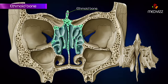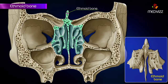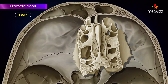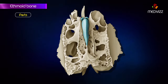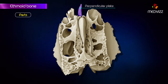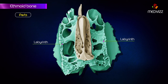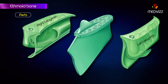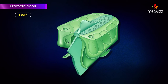The ethmoid bone is an unpaired fragile bone located between the two orbital cavities. It consists of the following parts: the cribriform plate, crista galli, perpendicular plate, and two labyrinths. It consists of a median vertical plate and right and left labyrinths. The median plate is further divided into the crista galli and the perpendicular plate. The median plate is connected to the labyrinth by a thin plate of bone known as the cribriform plate.